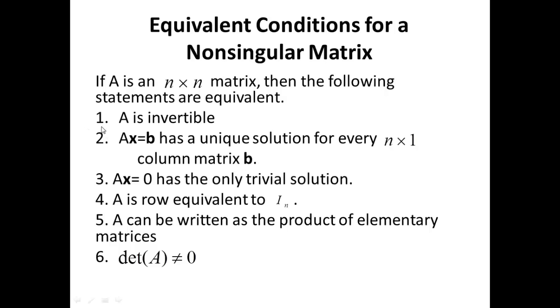And you can see quickly how to prove that 1 implies 2. If A is invertible, i.e. A inverse exists, then I can multiply both sides from the left by A inverse. And A inverse times A will give me I, so I'm left with just X. And on the right-hand side, I have A inverse times B, which is my unique solution.